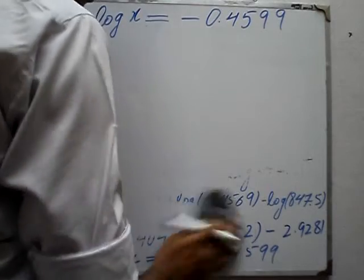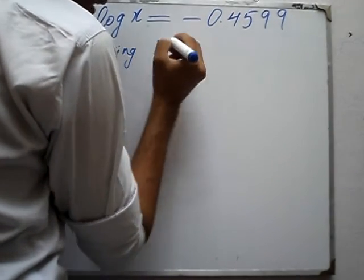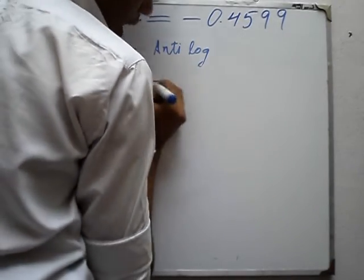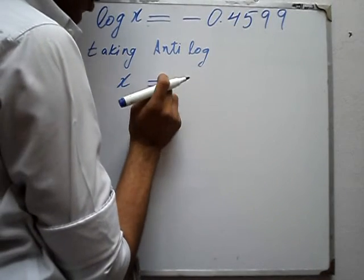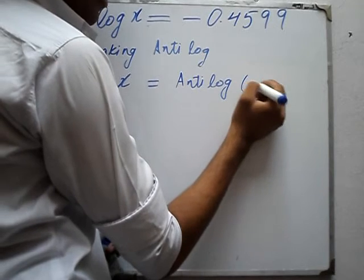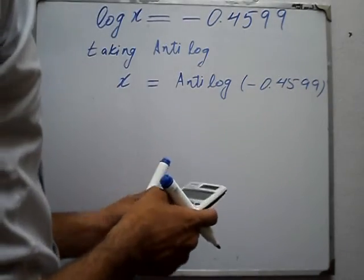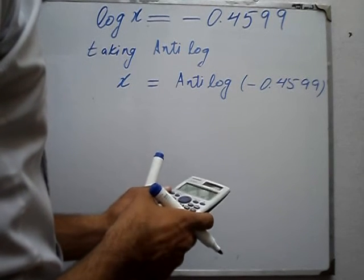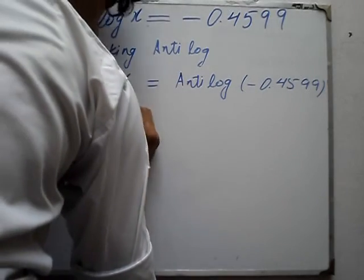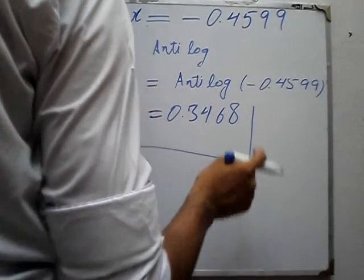Now what we will do is find the antilog. Taking antilog: on the left side x will come, and on the right side antilog of minus 0.4599. Using shift log of minus 0.4599, it is equal to 0.34681. So x is equal to 0.34681. This is to 4 decimal places, and this is our answer.